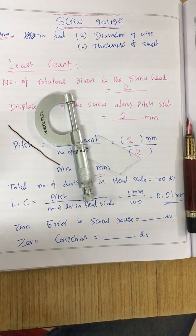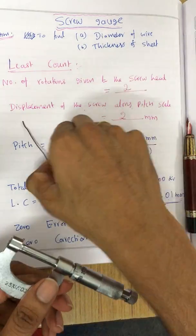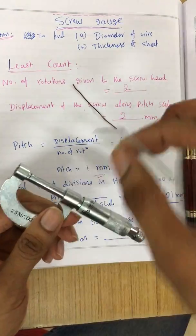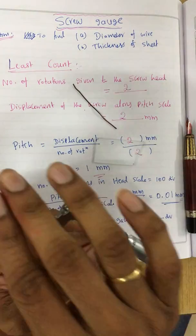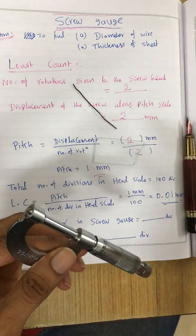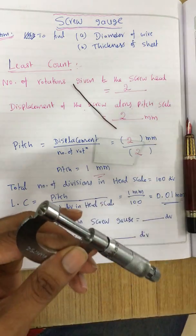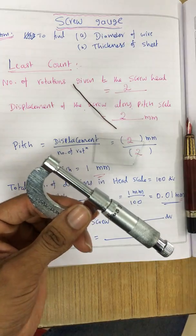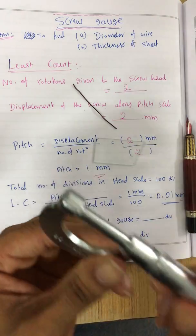Hello, welcome to this lecture. Here we go with a screw gauge. We are going to find out the diameter of the wire as well as the thickness of the given glass plate using a screw gauge. We are not going to use vernier calipers or meter scale because they are not going to give us a very precise value. This one will give us a very precise value in terms of millimeter.